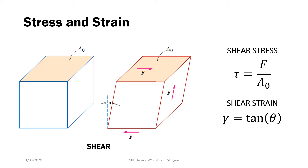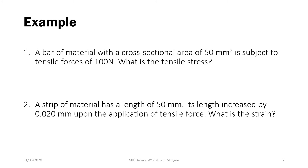In low delta values — when the angle of deformation is small — we can usually approximate that gamma equals delta, due to this property of the tangent function. Now let's look at some examples regarding stress and strain.